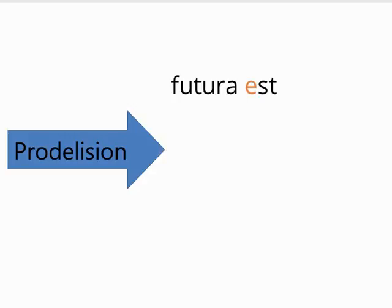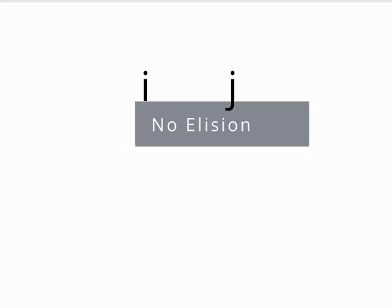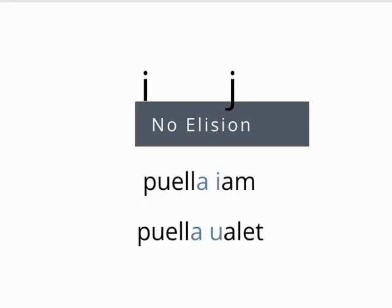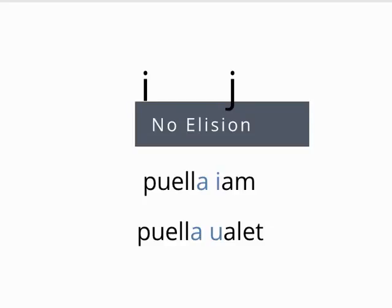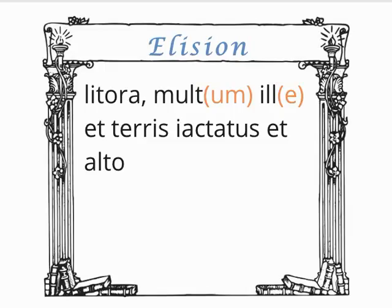Remember that when dealing with elision of any kind, we are dealing with vowel sounds. This means that consonantal I's and J's are not subject to elision. For example, puella iam has no elision, nor does puella valeat. If you understand elision, then you are able to tackle almost any line of Latin verse.